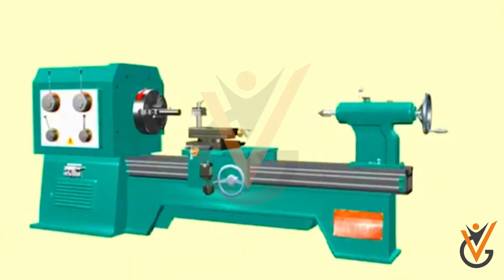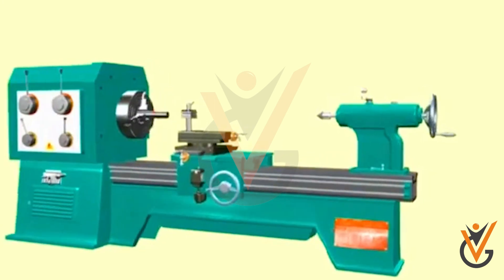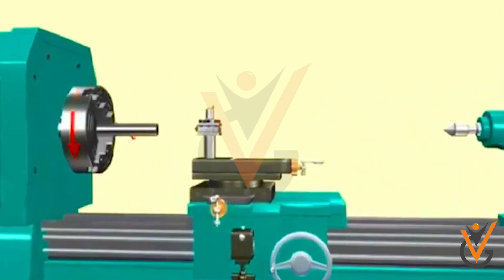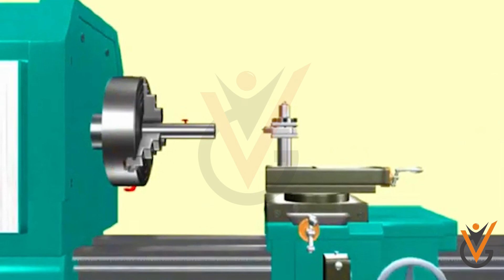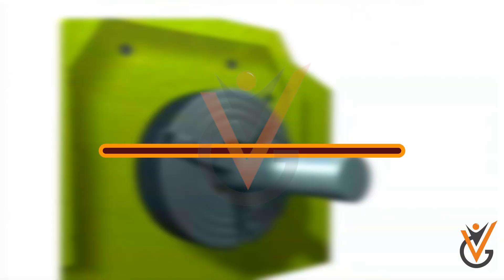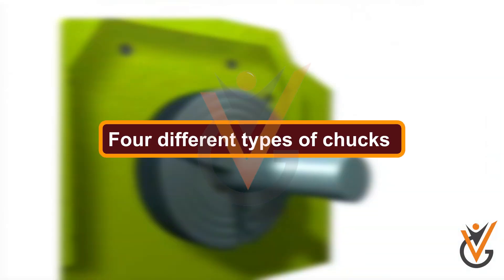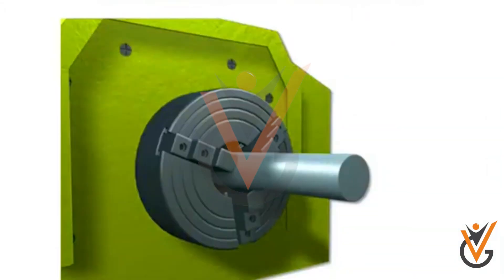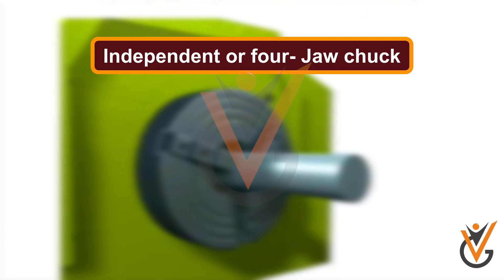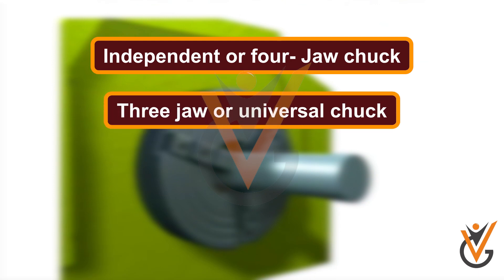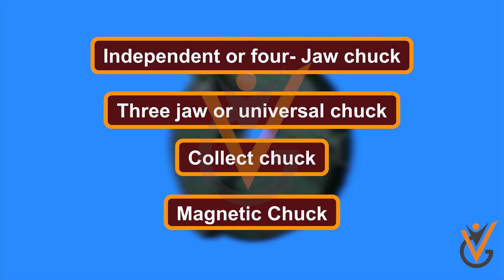Chuck is basically used to hold the workpiece, particularly of short length and large diameter or of irregular shape, which can't be conveniently mounted between centers. It can be attached to the lathe by screwing on the spindle nose. Four different types of chucks are most commonly used in lathe: independent four-jaw chuck, three-jaw or universal chuck, collet chuck, and magnetic chuck.